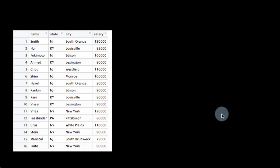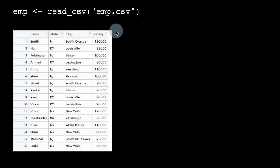Suppose we have a data set that looks something like this. You can replicate it — I'll give you this file m.csv. This is just a made-up data set. You've got names of people, the state in which they live, the city in which they live, and their salary.